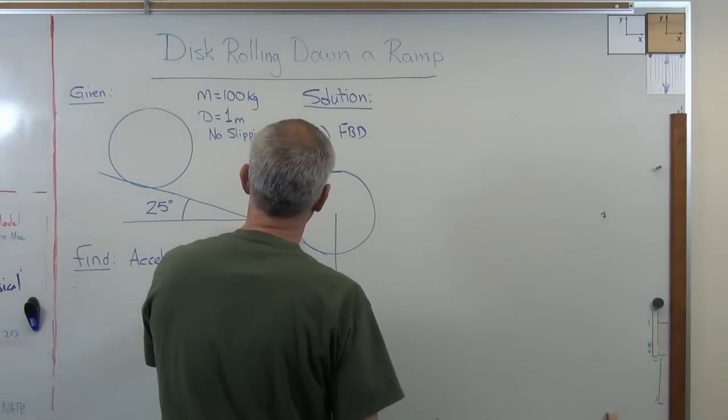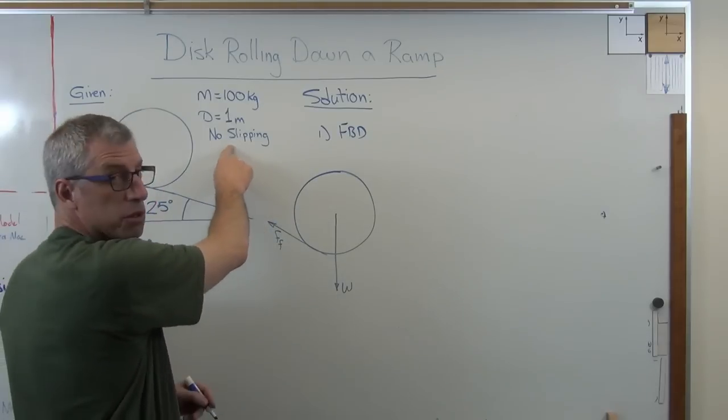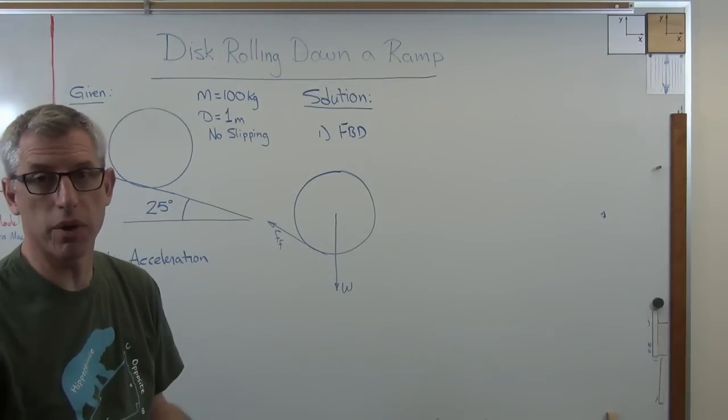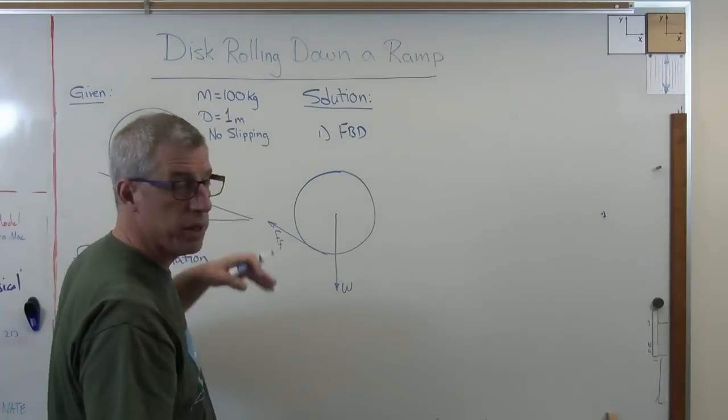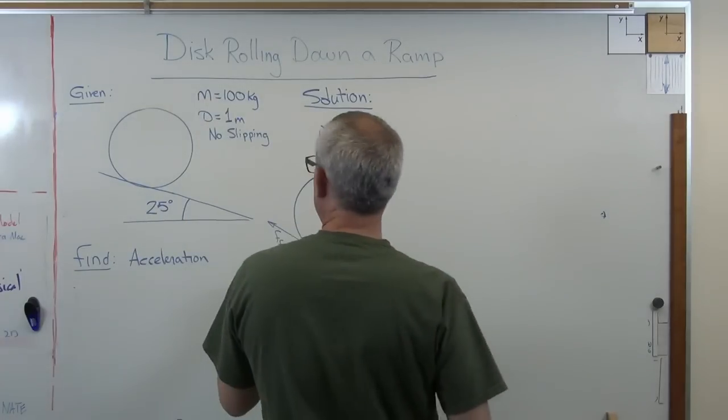We've got friction coming off along the ramp. Now we've said no slipping here. So the friction is going to be whatever it needs to be. It's not important here. We don't need to know mu. We just need to know that mu is high enough. This thing isn't going to slip.